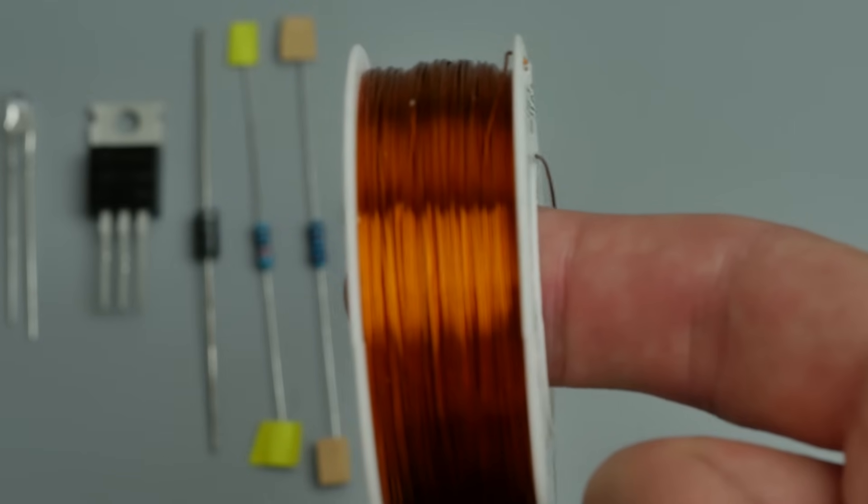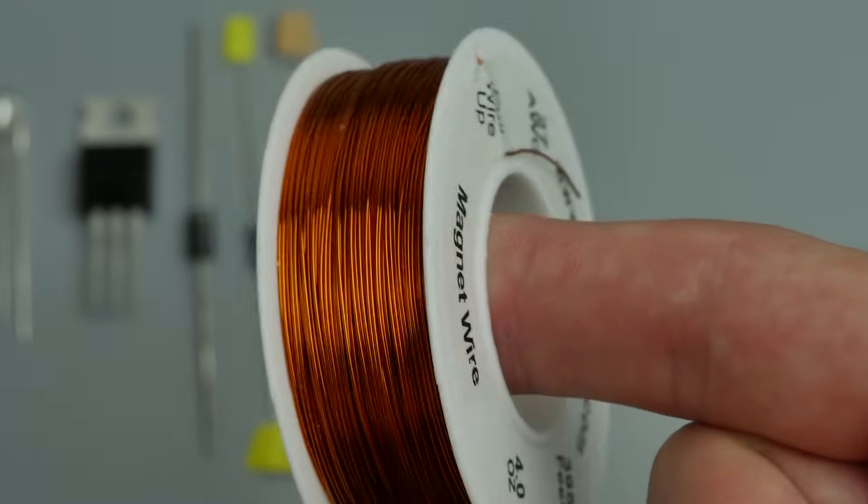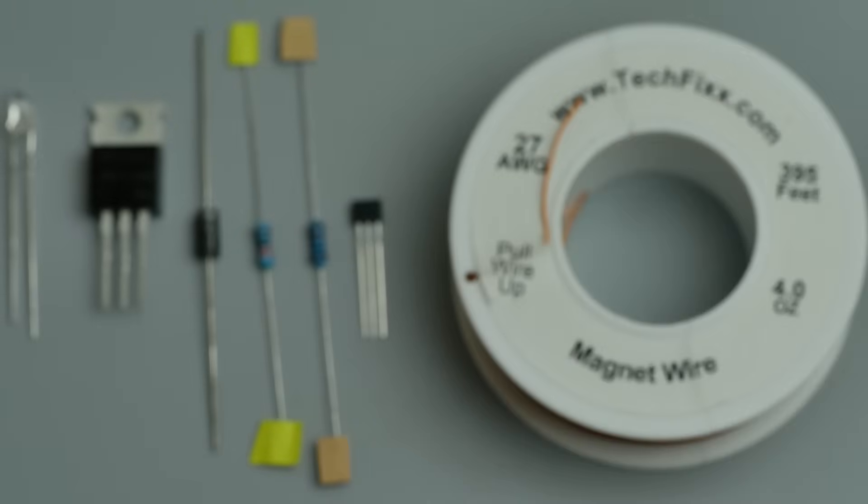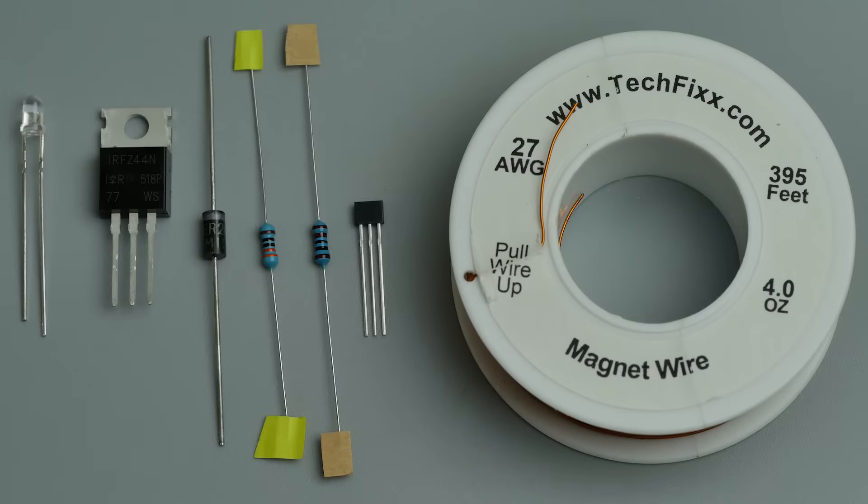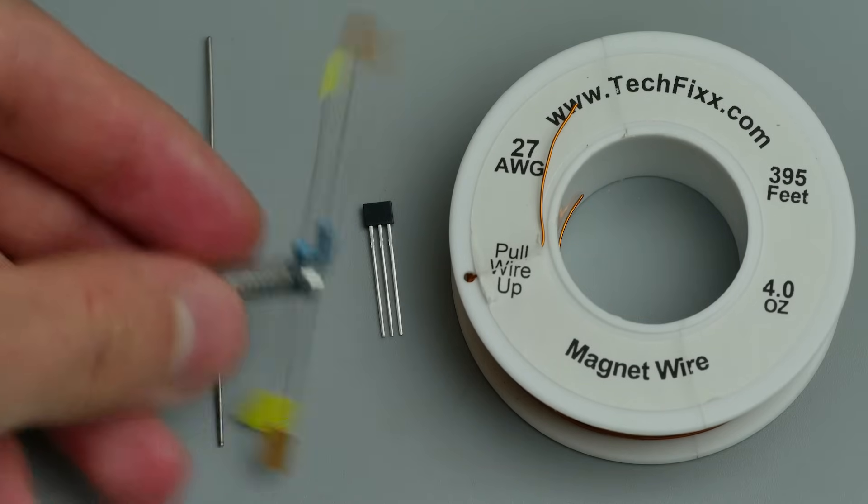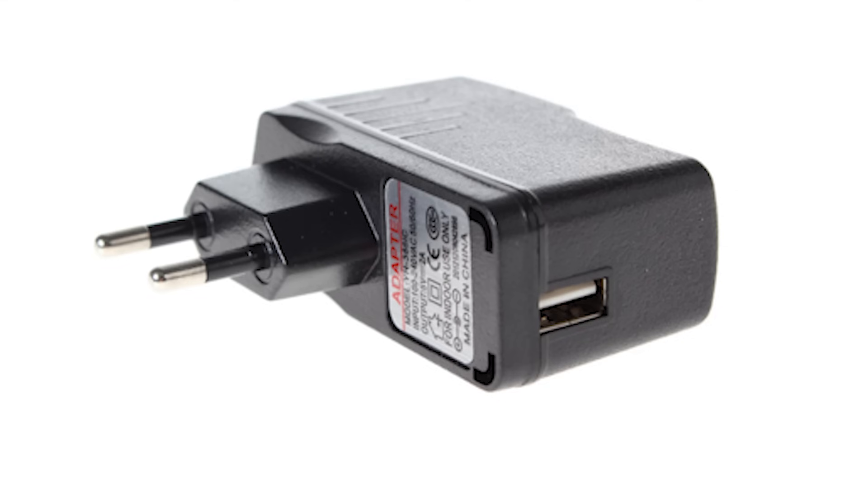By the way, the list of all components with links to Aliexpress is in the description. Copper winding wire, diameter of 0.3 to 0.4 mm, about 20 meters. I use 0.36 mm wire, which is 27 American wire gauge. Neodymium magnet, mine is 5x1 mm, and a 5V phone charger.